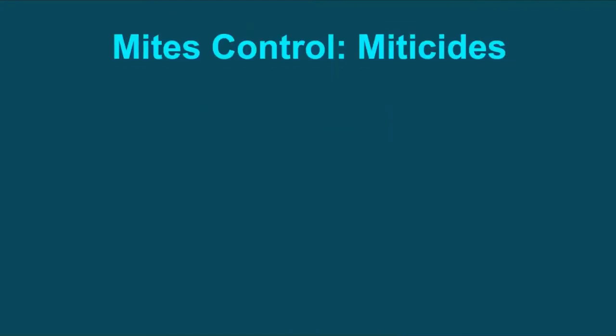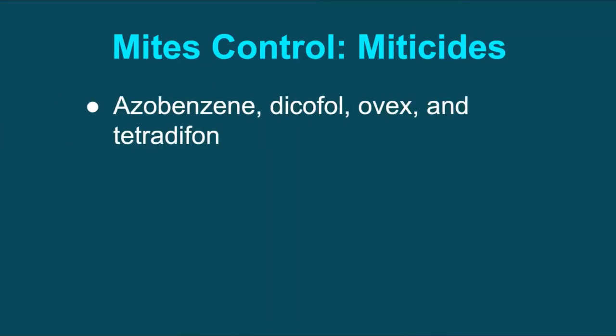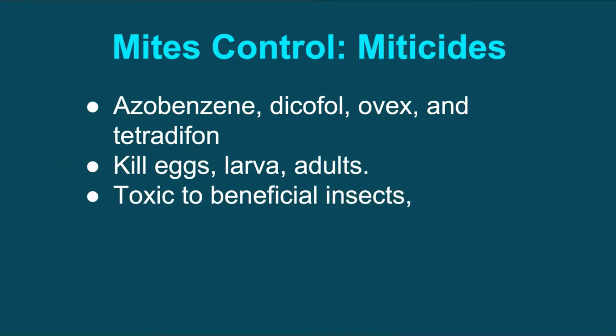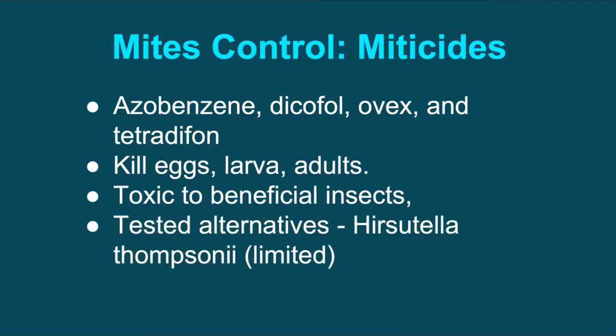In order to control mites, miticides — also known as acaricides — like azobenzene, dicofol, ovex, and tetradifon are commonly used. Many miticides kill eggs and larval stages as well as adult mites. Some are also toxic to honeybees and other beneficial insects; hence higher doses should always be avoided.